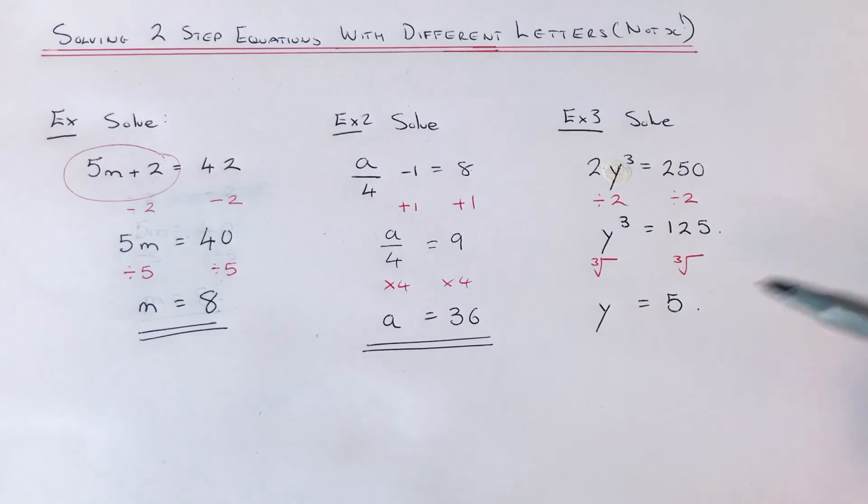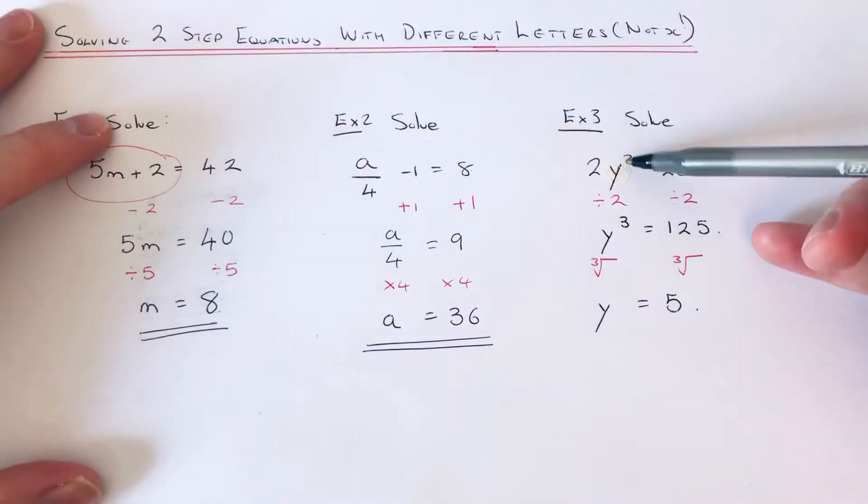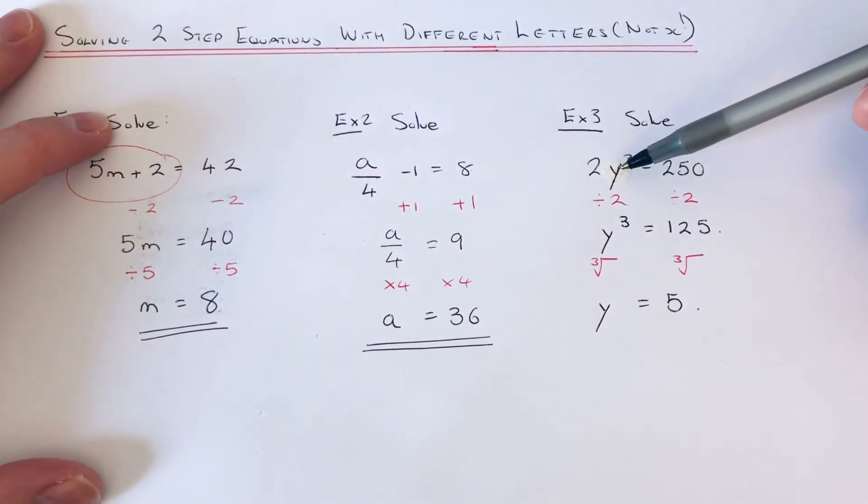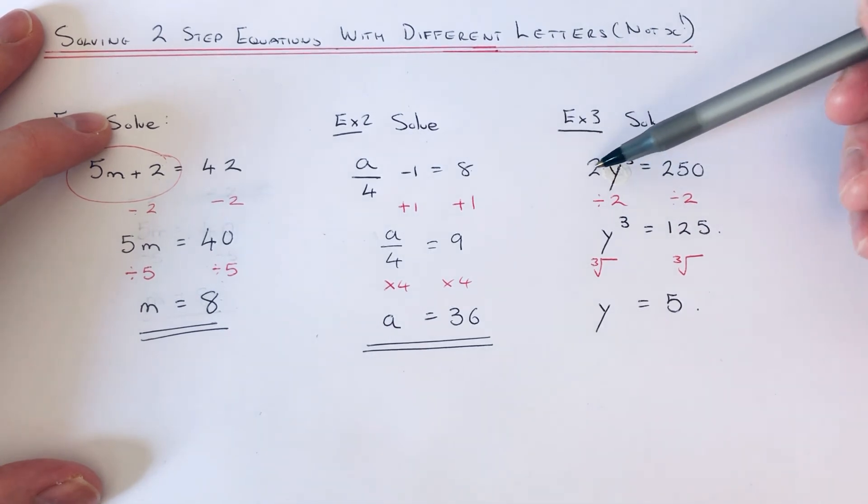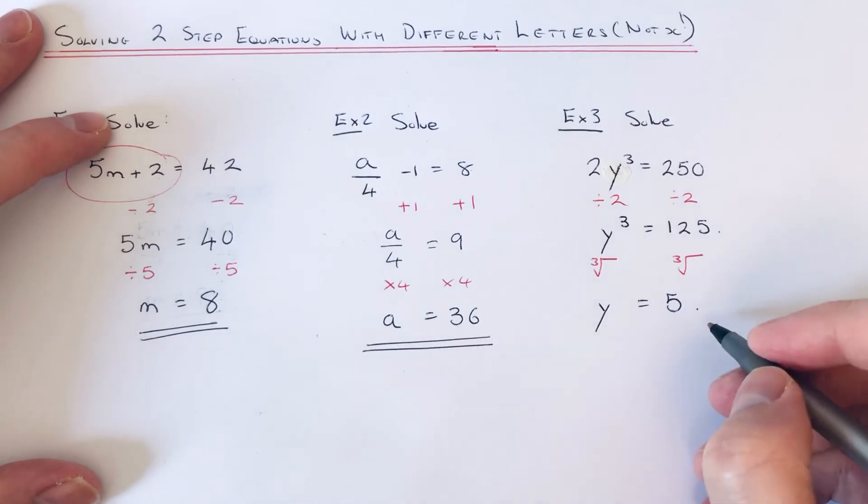So again, you can check that answer is correct by putting it back into the first equation. So 5 cubed is 125. Multiply it by 2, it does give 250.